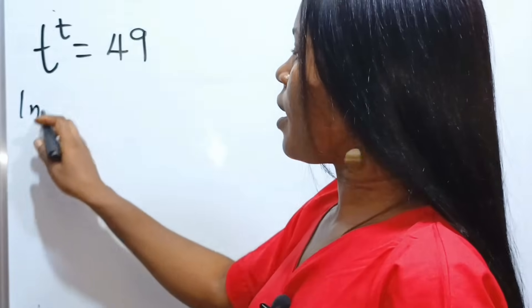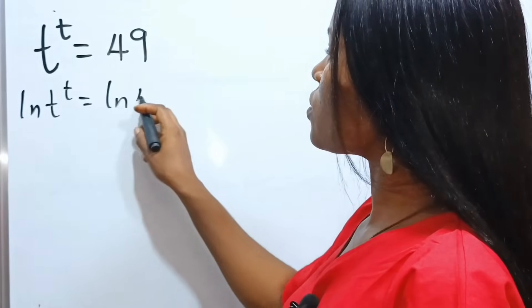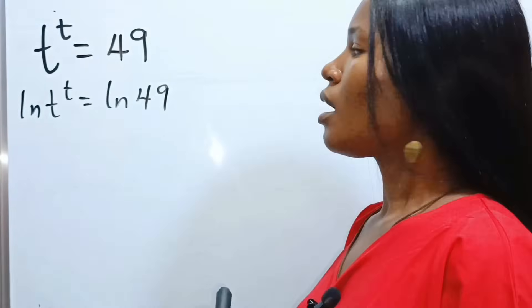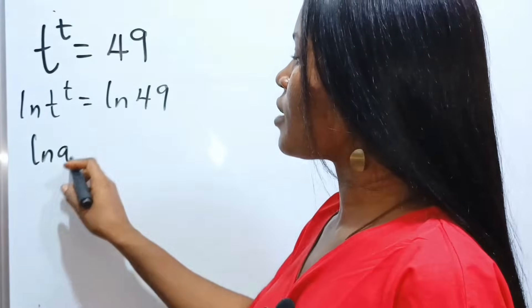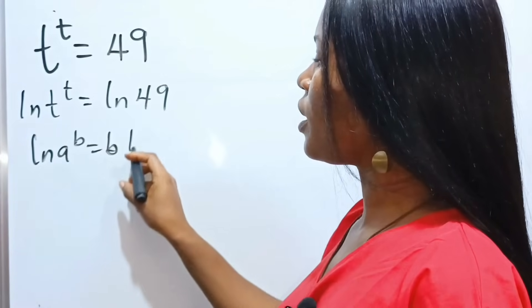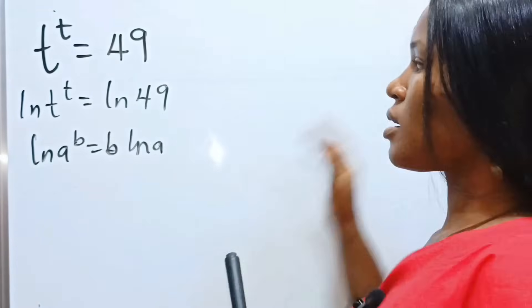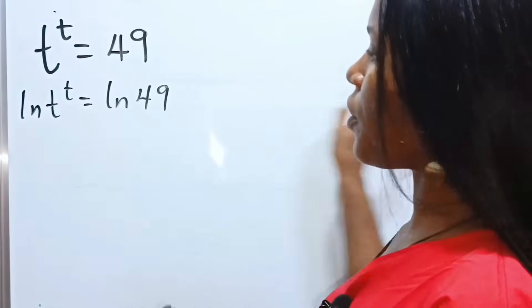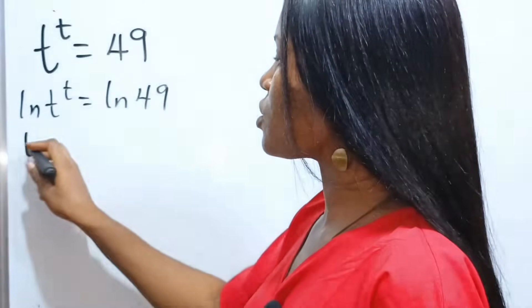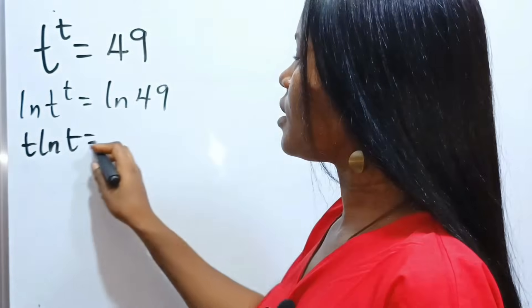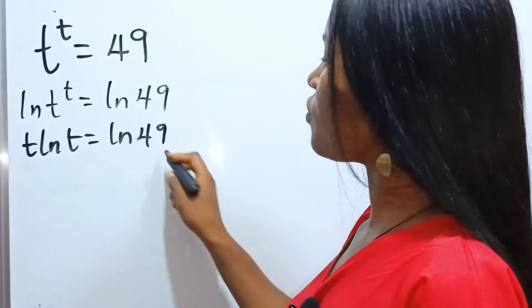So, ln t to the power of t is equal to ln 49. Now, when you have ln a to the power of b is equal to b ln a. So, that means that we can bring this down to multiply ln t. So, we have t ln t is equal to ln 49.